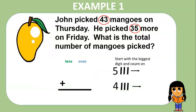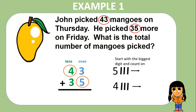We're going to circle the number 43 and the number 35. I'm also going to circle the biggest digit in each column and I will begin with those digits and count on. So I have five and I will count: five, six, seven, eight. Then I have four, so I will count: four, five, six, seven. So the sum is 78.